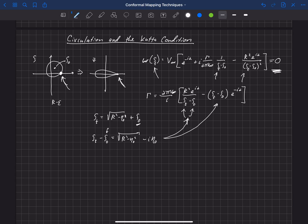Now we get gamma equals four pi v infinity times the square root of r squared minus eta naught squared times the sine alpha plus eta naught cosine alpha. So this is the value of gamma that will make this point a stagnation point in the flow.